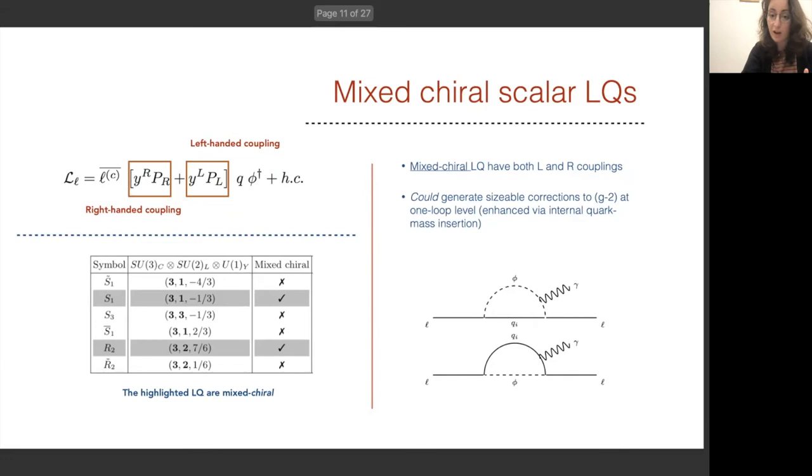To explain the chirality of the couplings and the language I'm going to use, the right-handed coupling refers to the right-handed quark in the interaction and the left-handed coupling refers to the chirality of the quark being left-handed. Phi here represents the particular leptoquark that we choose. Now mixed chiral scalar leptoquarks have both the left and right-handed couplings. There are actually only two of these scalar leptoquarks that are mixed chiral, S1 and R2, and both have garnered quite a lot of interest in the literature for different flavor physics anomaly models as well.